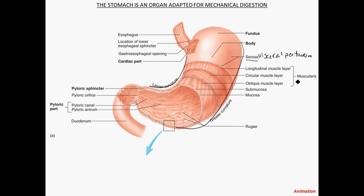In the esophagus there are two layers of smooth muscle. We see the esophagus coming down and joining the stomach at what is known as the lower esophageal sphincter. This is sometimes also known as the cardiac sphincter because it is located near the heart. The sphincter is a muscle layer that acts as a valve to close off the lumen of the stomach from the lumen of the esophagus.